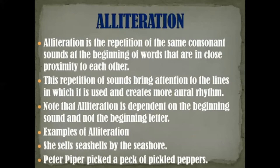Now let's come to the next figure of speech — alliteration. Alliteration is the repetition of the same consonant sounds at the beginning of words that are in close proximity to each other. This repetition of sounds brings attention to the lines in which it is used and creates more oral rhythm. Note that alliteration is dependent on the beginning sounds and not the beginning letters — you have to remember this. Example: 'She sells seashells by the seashore.' Here we are repeating the letter S, and it's like a tongue twister.